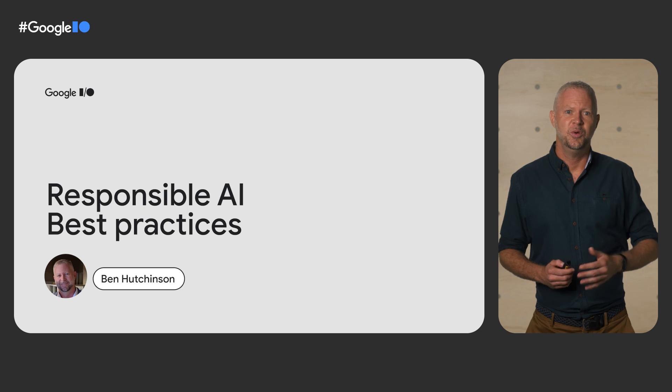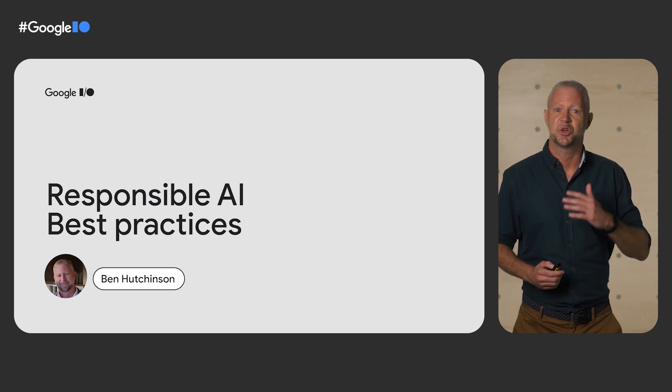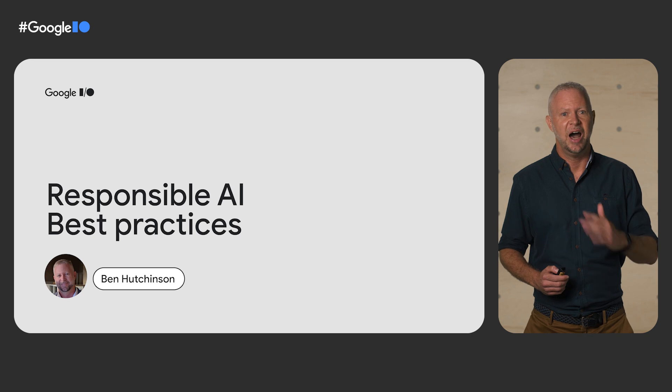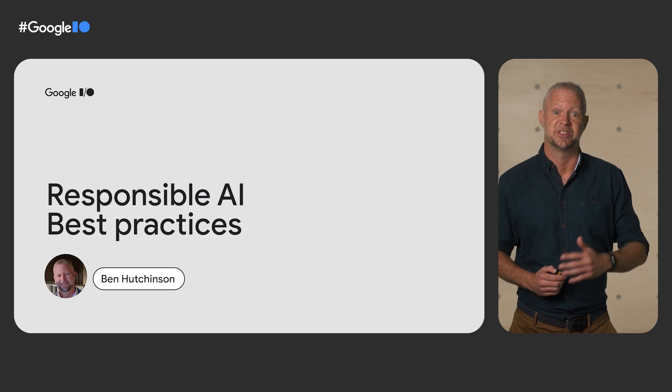So what can be done to proactively address these downstream impacts? We're going to hear now from Ben Hutchinson, who researches data ethics inside Google, for some best practices around data collection. My name is Ben, and I'm a software engineer on Google's responsible AI team. To help avoid unexpected consequences later on, it's critical to prioritize high-quality, representative data collection from the start.